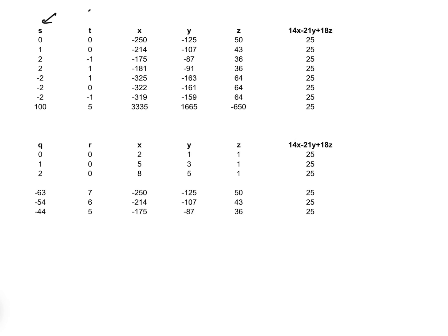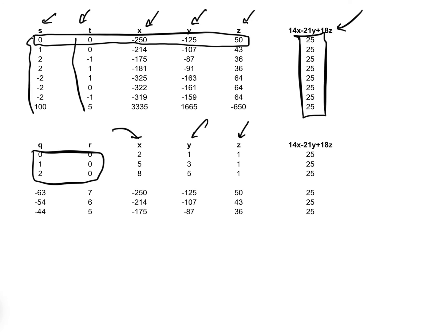This was the first method we used with S and T. If we just put random values in for S and T here, we get these values for x, y and z. When we put that in as 14x minus 21y plus 18z, obviously we get 25. If we put the same values in for Q and R, we will get different values of x and y, but the answer is still the same. Just take this top answer where x equals minus 250, y equals minus 125, and z equals 50, which does give us 25. Putting S equals 0 and T equals 0, to get the answer we would have to put Q equals minus 63 and R equals 7 in the second method, but we still get the same solution.